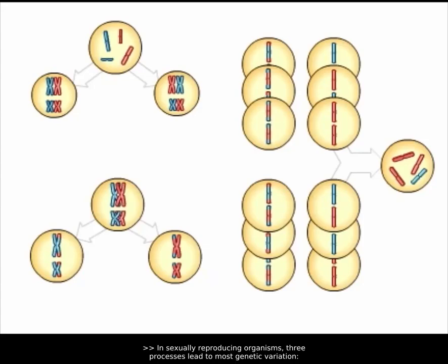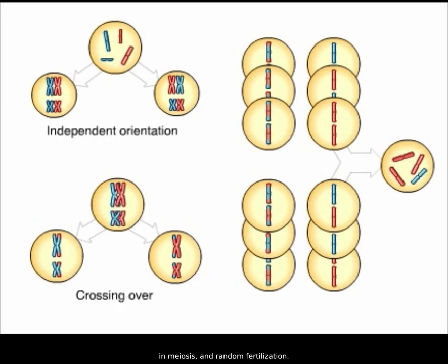In sexually reproducing organisms, three processes lead to most genetic variation: independent orientation of chromosomes in meiosis, crossing over of chromosomes in meiosis, and random fertilization.